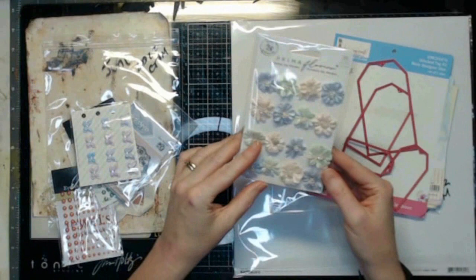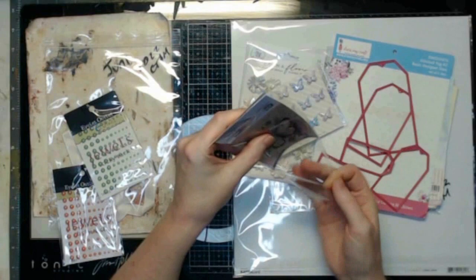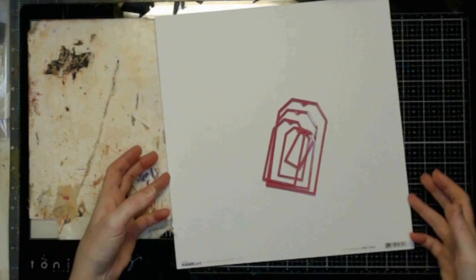Some Prima flowers, little Prima butterflies, a butterfly and flower stamp here, a couple of packs of jewels, and some seam binding.